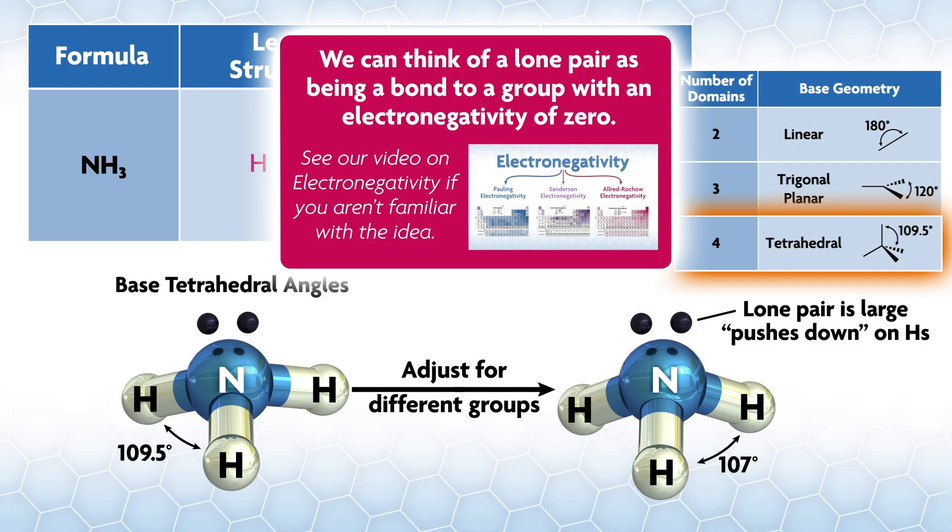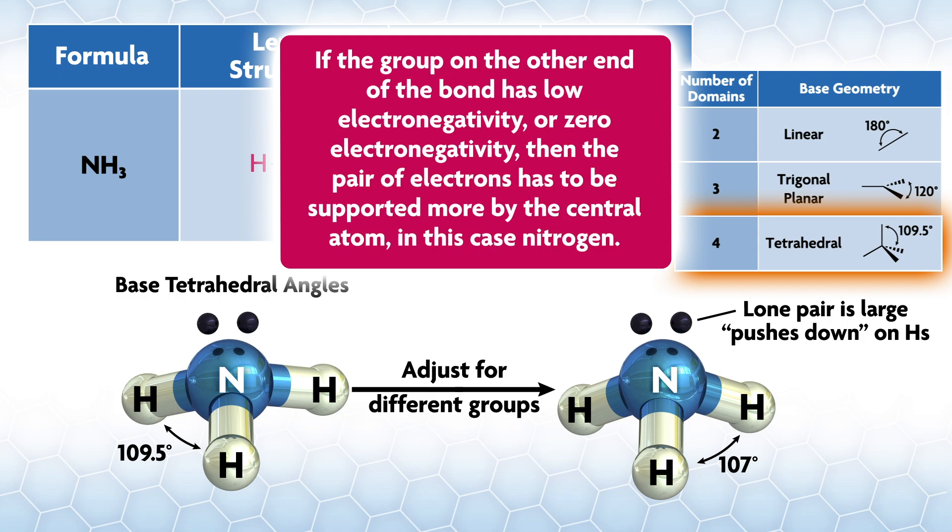Since there are four total domains in AX3E, the base geometry is tetrahedral and we place the four groups on a tetrahedron. When we have a different group, some may have a larger domain and take up more space. A lone pair is larger than any other two-electron domain - in other words, it is larger than anything with a single bond.